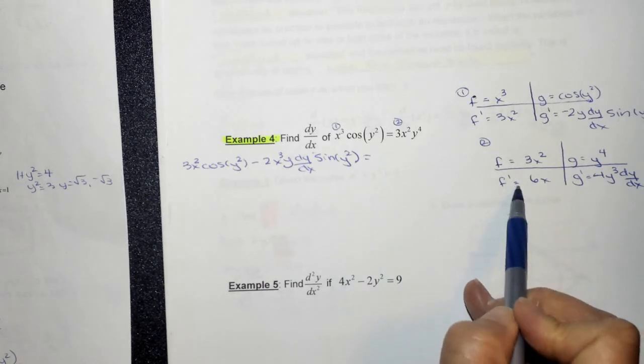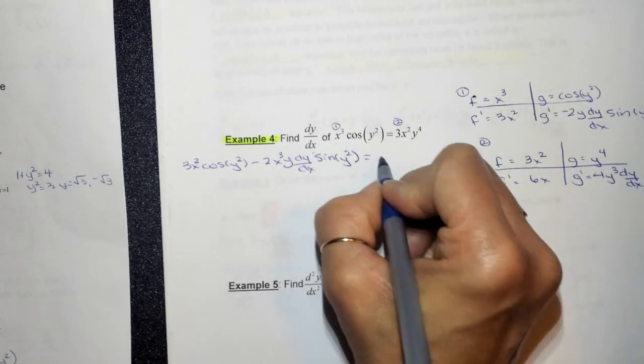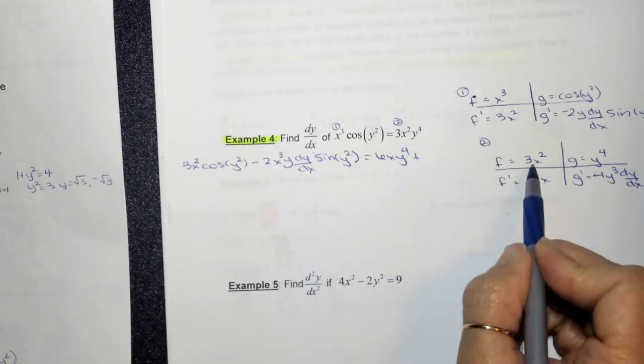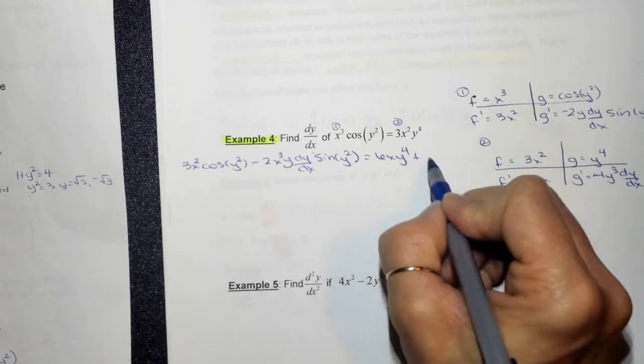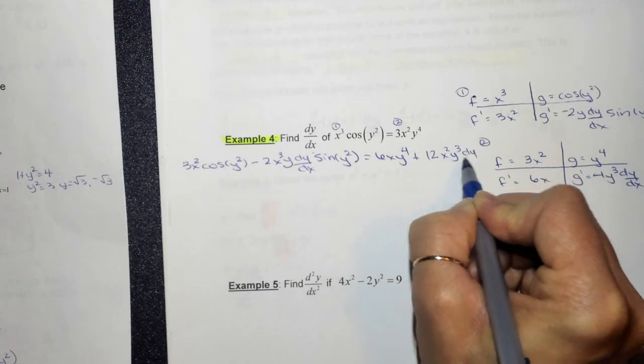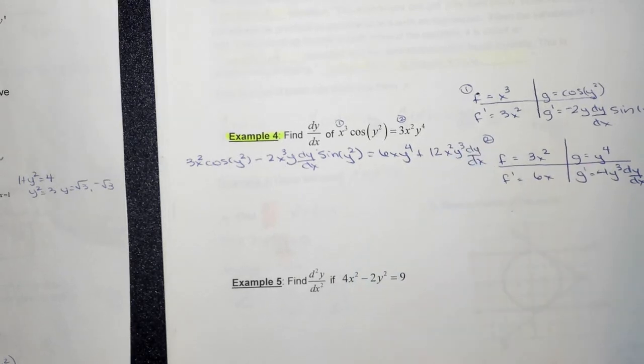So it's f prime times g. So we've got 6xy to the fourth, plus 12, because I'm multiplying these two together, 12x squared y cubed dy dx. Whew! Okay.